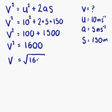Now at this point, you can use your calculator to find the square root of 1,600. The square root of 1,600 is 40, so V equals 40. And our units for speed or velocity is metres per second. So our answer is 40 metres per second.